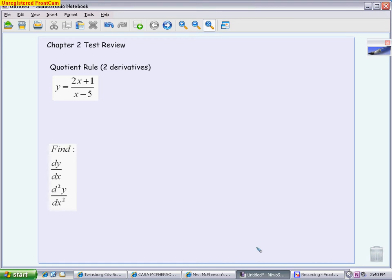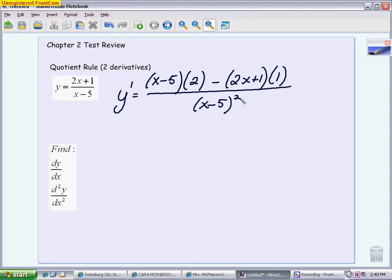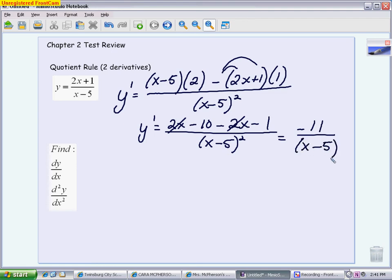We're going to start with just the first derivative and using the quotient rule. Our quotient rule is the bottom times the derivative of the top minus the top times the derivative of the bottom all over the bottom squared. You want to clean up the top as much as you can, get the distributing done, combine the like terms. So we get 2x minus 10. Make sure you distribute the minus sign, 1 minus 2x minus 1. You're not going to touch the bottom. You want to leave it as a binomial squared. So when you're done, your 2x's will cancel. You get a first derivative of negative 11 over x minus 5 quantity squared. That's your first derivative.